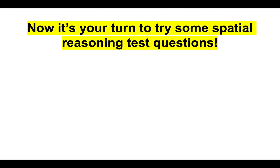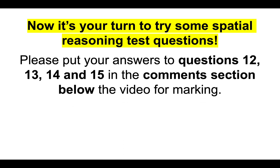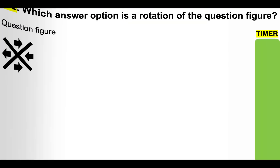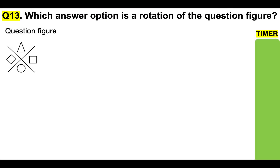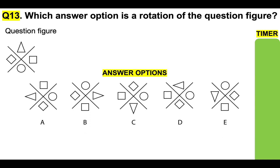I'd now like you to try some of these spatial reasoning test questions. Please put your answers to questions 12, 13, 14, and 15 in the comments section below the video for marking. Thank you very much. Question 12: which answer option is a rotation of the question figure — A, B, C, D, or E? Here is your timer. Put your answer in the comments section below, please.